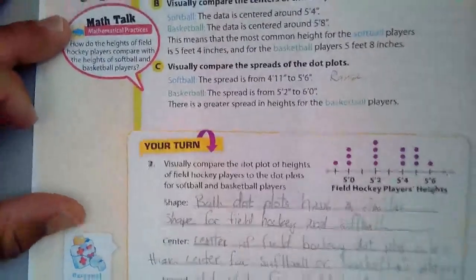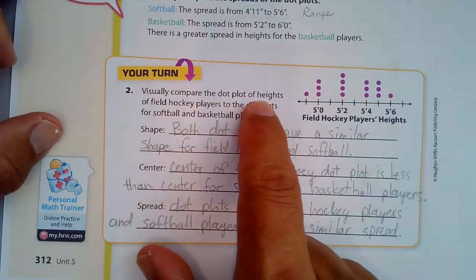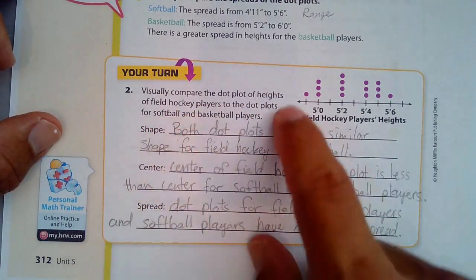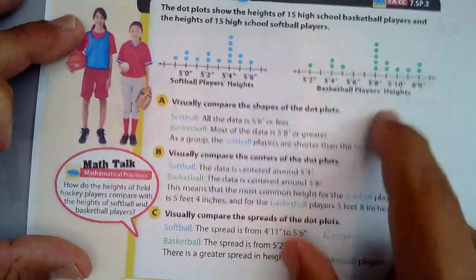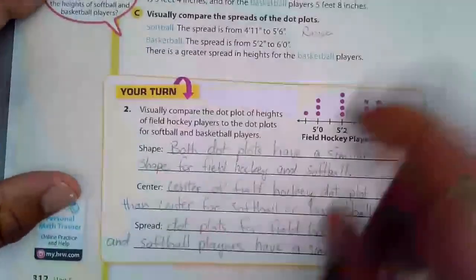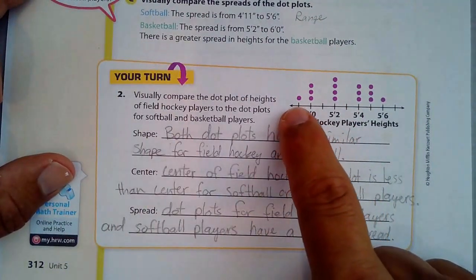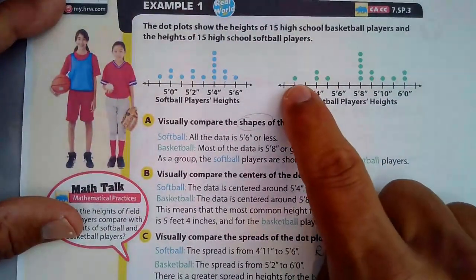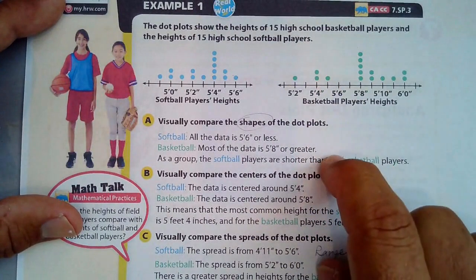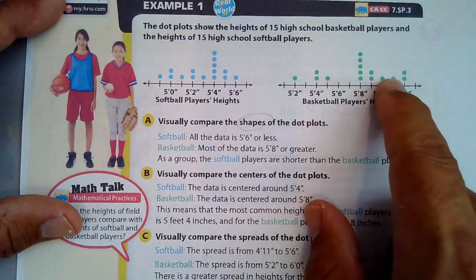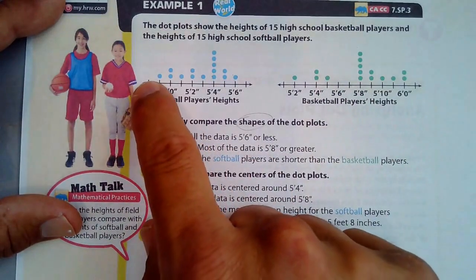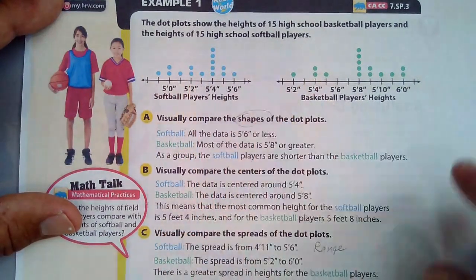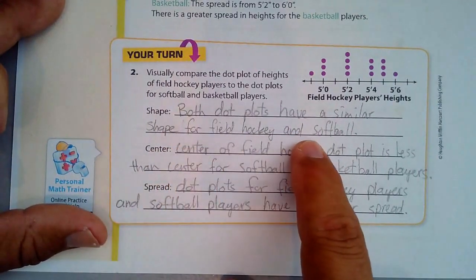For our Your Turn question, it asks you to visually compare the dot plot of heights of field hockey players to the dot plots for softball and basketball players. Here's field hockey, and we have softball and basketball. First you're asked to talk about the shape, compare the shape. It looks like it goes down, up, and back down, this general shape. And this one, it kind of does, but there's a big gap in between here. And yeah, it kind of like tails off and swoops up again. This one goes, is down, up, and down. It's closer. I would call it more similar to this than this. So that's why I said both dot plots have a similar shape for field hockey and softball.